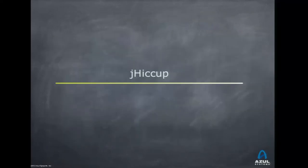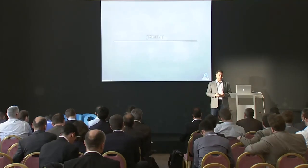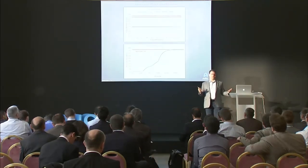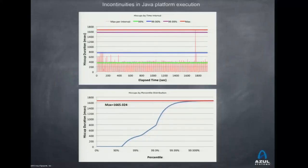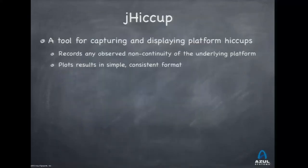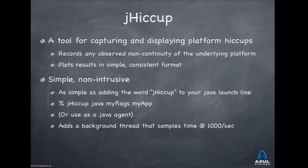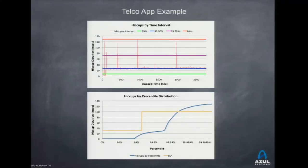Another tool is jHiccup — open source — which documents execution discontinuities in Java systems. It measures whether your JVM was even running and captures any hiccups it sees. If the JVM has a hiccup, so did your application at the same time. It produces pictures with hiccups by time interval at the top and the distribution at the bottom, with an optional SLA or requirement line overlaid.